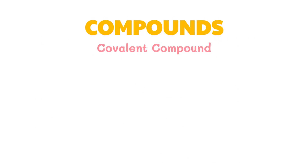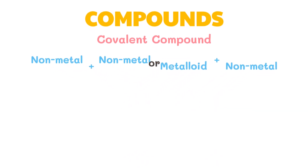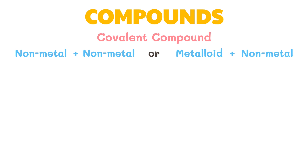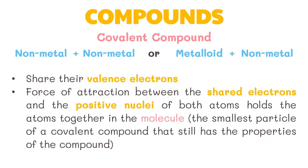Covalent compounds are substances formed from the chemical combination of two or more non-metallic elements — either a non-metal and another non-metal, or a metalloid and a non-metal. Atoms of the different elements are held together in molecules by covalent bonds. Unlike ionic bonds where electrons completely transfer from one atom to another, covalent bonds share their valence electrons. The force of attraction between the shared electrons and the positive nuclei of both atoms holds them together. A molecule is the smallest particle of a covalent compound that still has the properties of the compound.